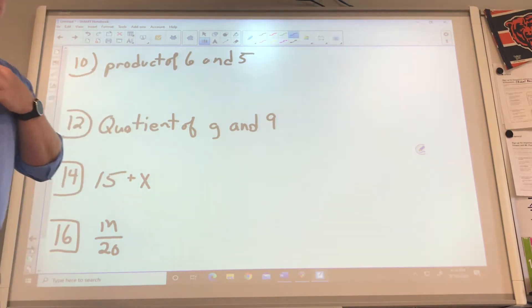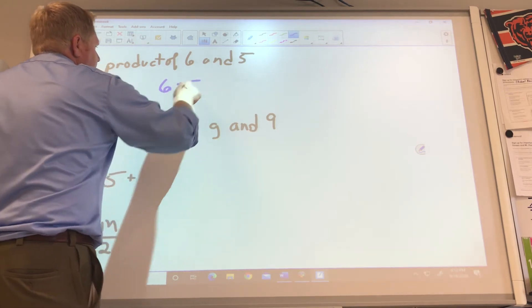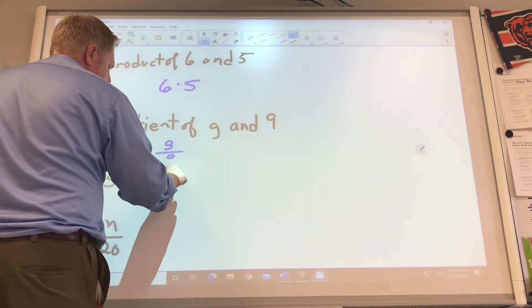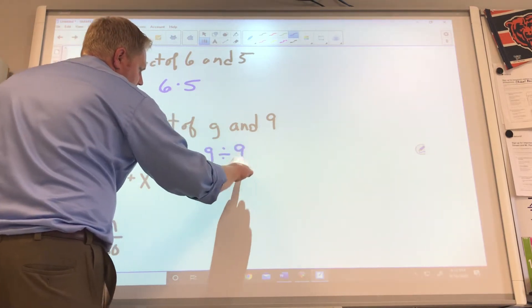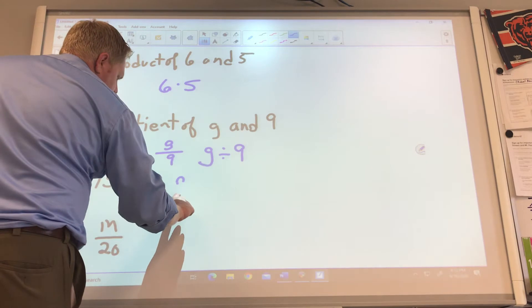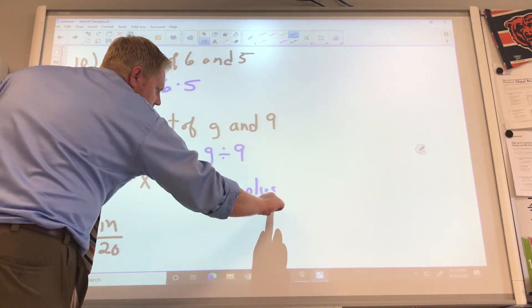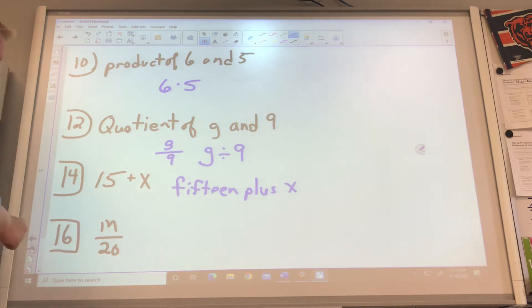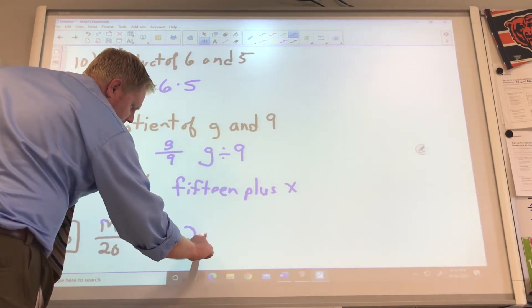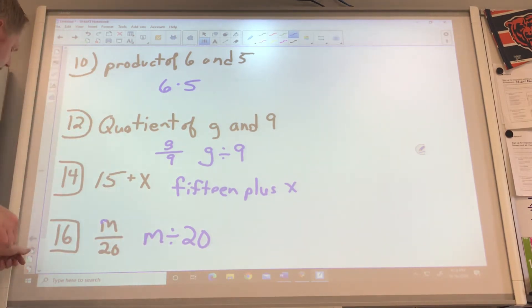Now write these as an equation or an expression, actually. Product of 6 and 5. 6 times 5. Good answer. Quotient of G and 9. G divided by 9 or G over 9. Either works. Then they want you to write these as words. 15 plus X. Great job. This actually should be M. M divided by 20. Keep it as simple as you can. You should have probably written the word divide in there. Again, being lazy.